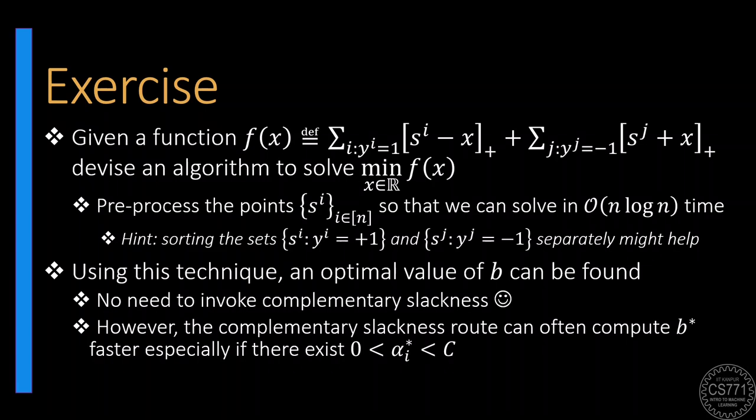However, we note that the complementary slackness route can be faster at calculating the optimal value of b, especially if we are able to find a value of alpha*_i that is strictly between 0 and C.